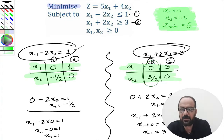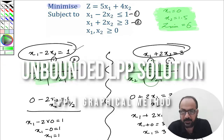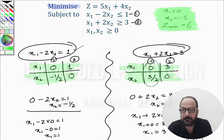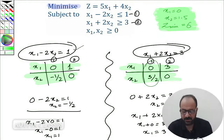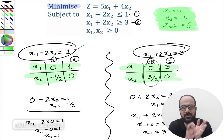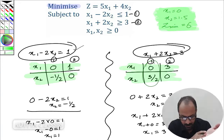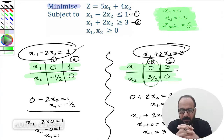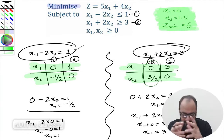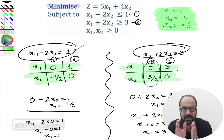Hello and welcome to this tutorial on how to solve a linear problem using the graphical method. This problem is almost the same as the problem we discussed in the third example of linear programming using the graphical method — it is literally the same with a slight twist.